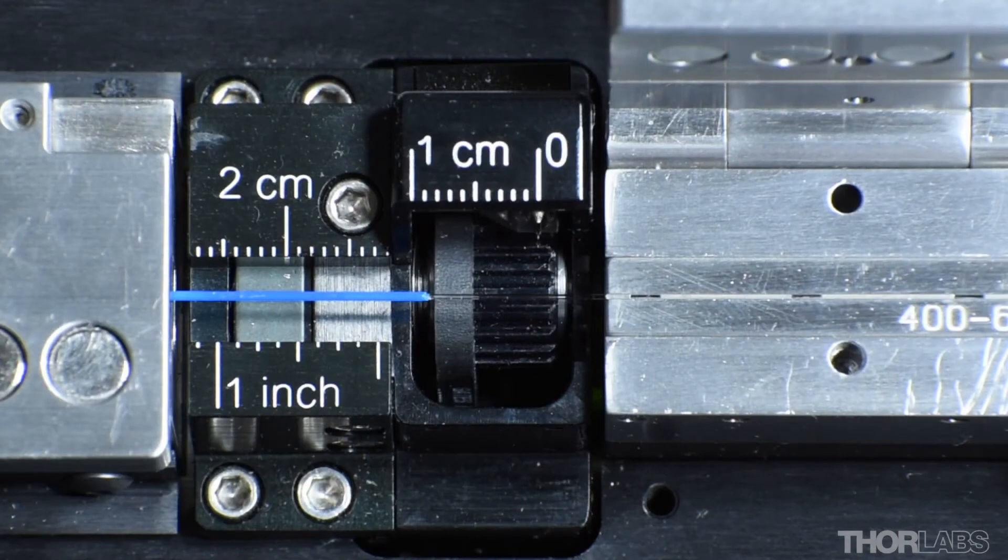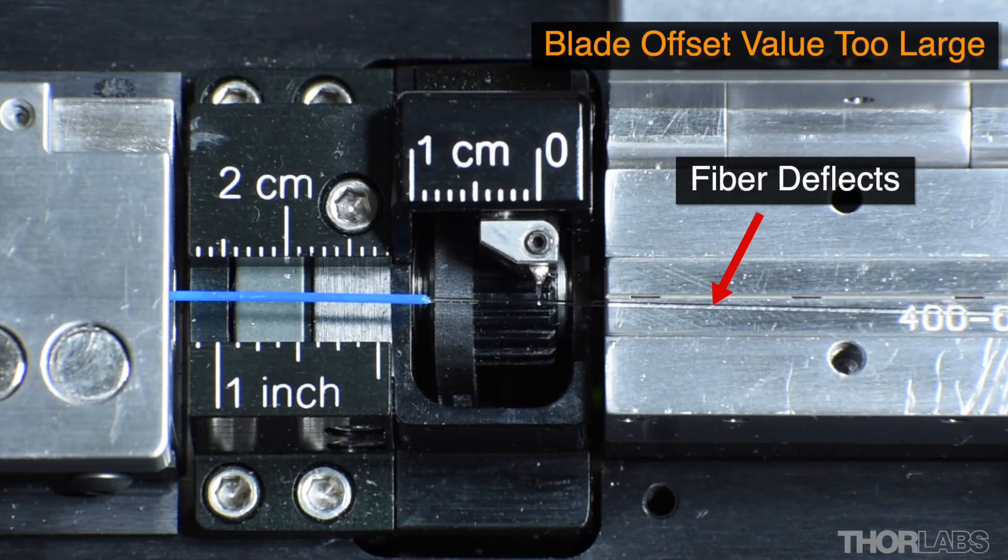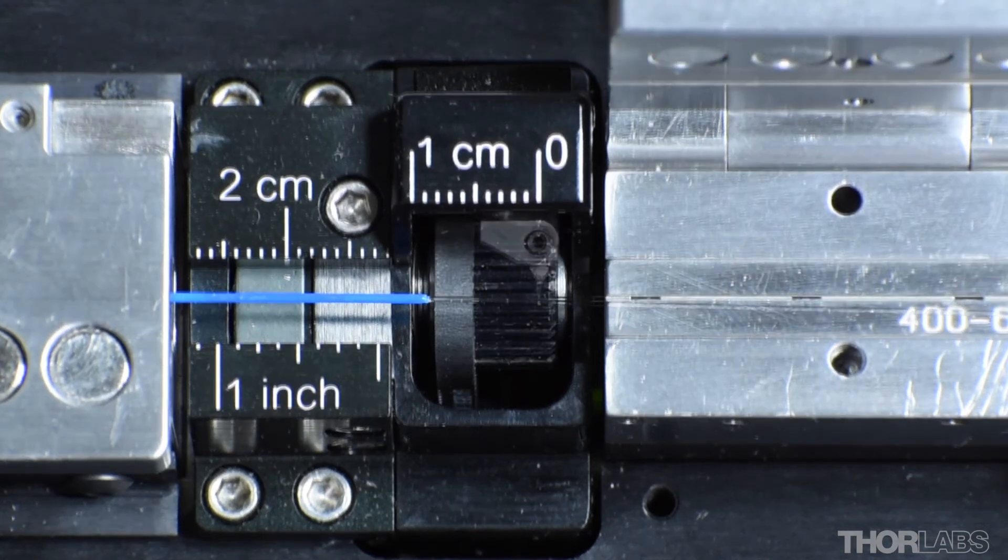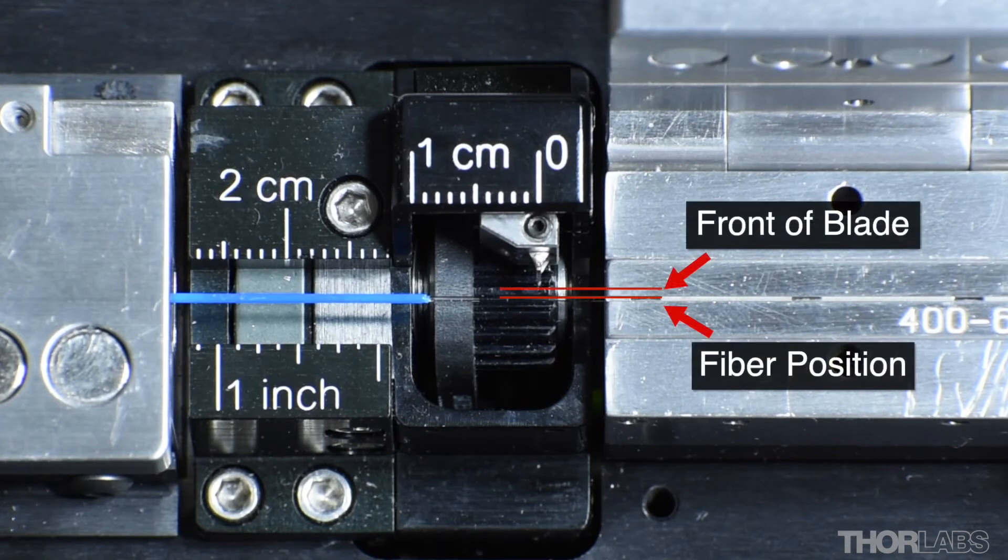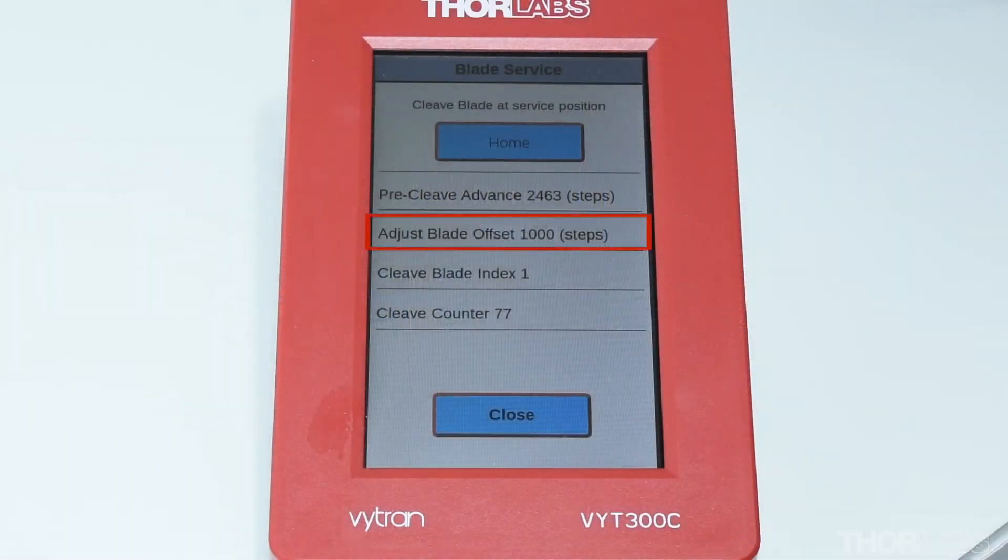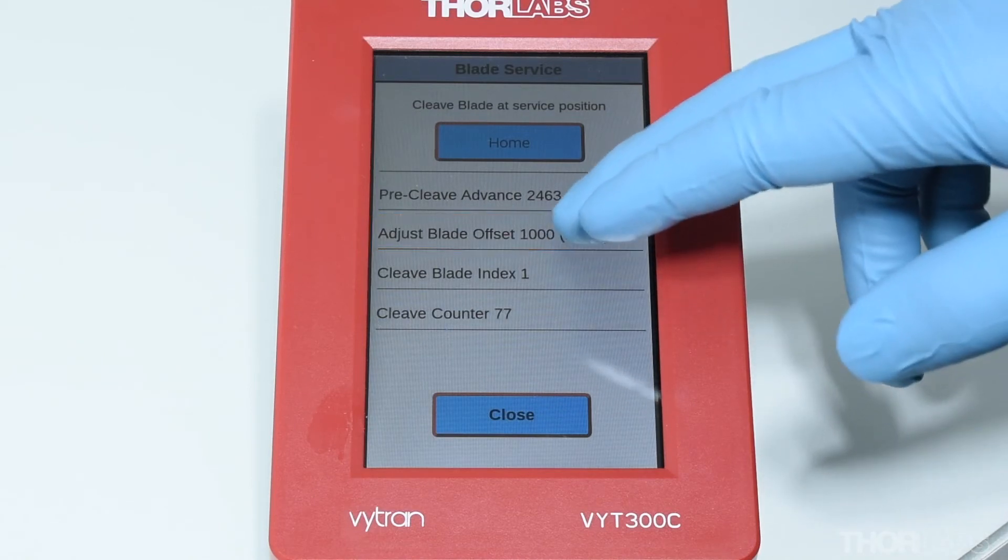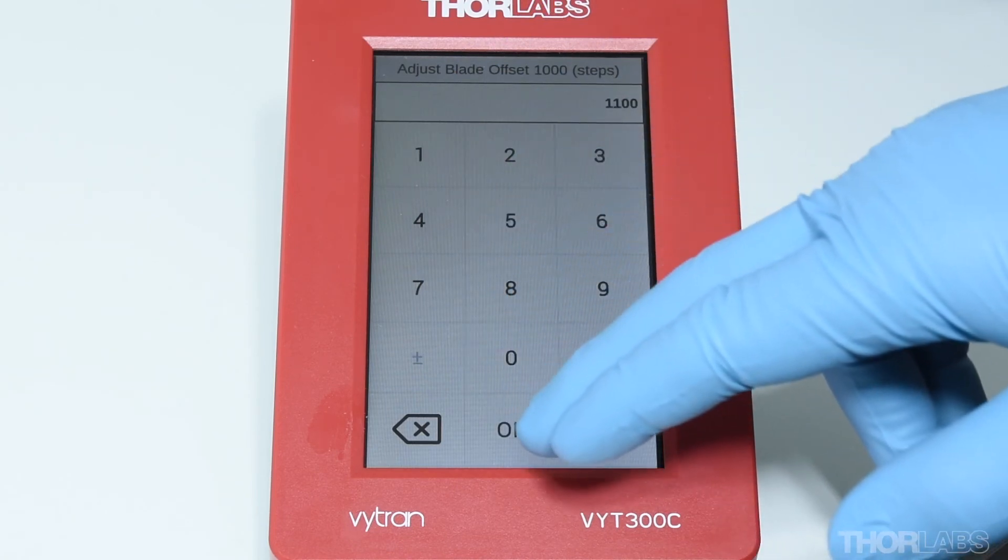If the blade moves so that it touches or deflects the fiber, the blade offset is too large. If the blade moves forwards but its end position is still a long way from the fiber, the blade offset is too small. Adjust the blade offset as required. Changes of only a few tens of steps will be needed if the blade is only slightly misaligned. Larger changes are required if there is a gross misalignment.